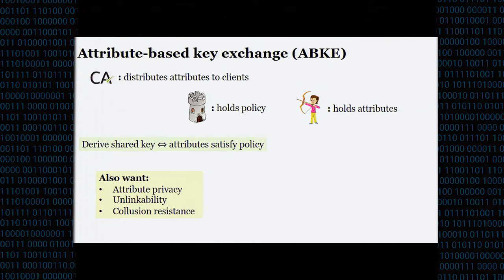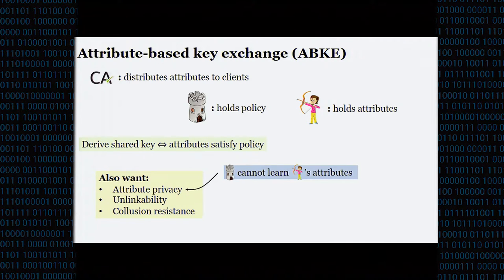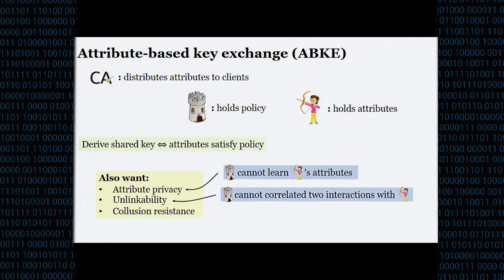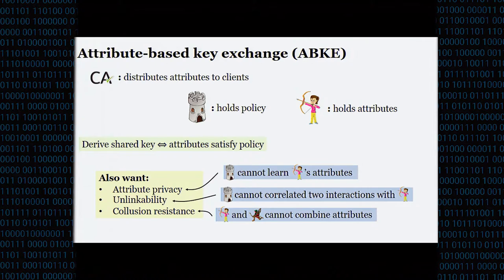We also want some additional privacy mechanisms. In particular, we want attribute privacy — the server should not be able to learn the client's attributes. We want unlinkability in the sense that the server should not be able to correlate two interactions with any two clients, so it shouldn't be able to determine whether it's speaking with the same client or not. And finally, important in all attribute-based schemes, we want collusion resistance — two clients with different attribute vectors shouldn't be able to combine them to produce a new attribute vector that they don't individually have.